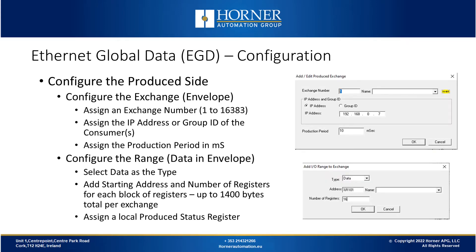Now let's look at configuration and how we set EGD up. First we typically configure the produce side that's sending the data. You configure the exchange for that produce data and assign an exchange number between 1 and about 16,000. Most applications just have a few exchanges. Then we need to assign who we're sending that exchange to. If we're sending it to a single device we'll assign an IP address. If we're sending it to a group of devices we'll assign a group ID, which is a number between 1 and 32. Then we have to assign how often we'll produce or send the data in milliseconds.